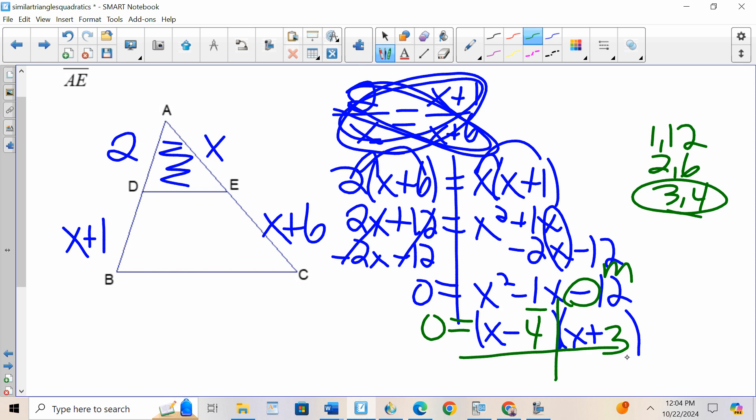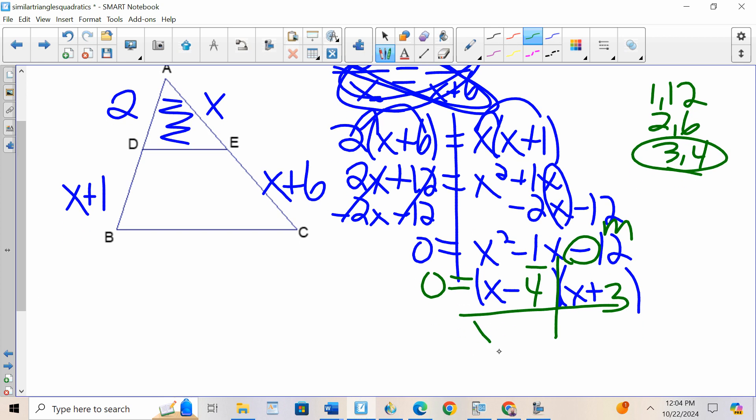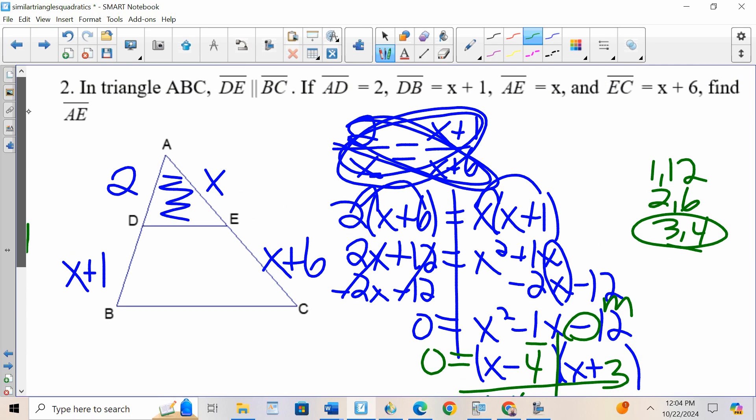Equals 0. I'm not done until I have X equals, so I set them equal to 0. I set X minus 4 equal to 0, I set X plus 3 equal to 0. I get X equals 4, I get X equals negative 3. Essentially the sign just changes. I can't have a negative length of a side, so I'm going to reject my negative value. X equals 4, now that I have X equals 4, it's asking for AE. AE is X, so AE is 4.